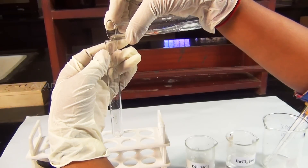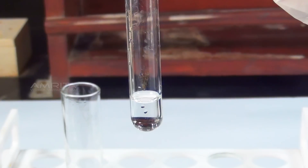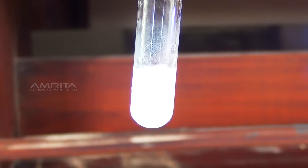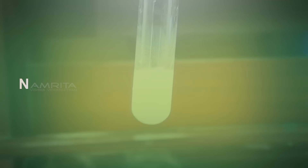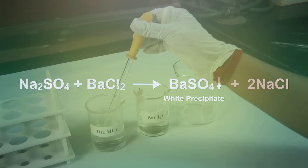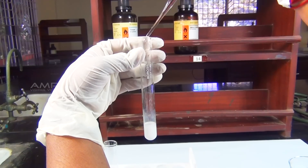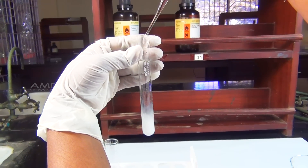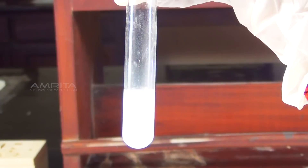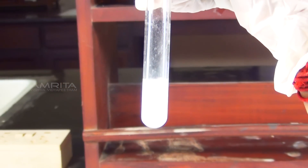Procedure: Take a small quantity of aqueous solution of the salt in the test tube. To this, add a small amount of barium chloride solution using a dropper. Sulphate reacts with barium chloride to form a white precipitate of barium sulphate. Using another dropper, add a small amount of dilute hydrochloric acid to this precipitate and shake the test tube well. The precipitate is insoluble in dilute hydrochloric acid.